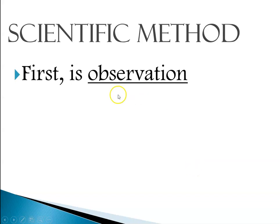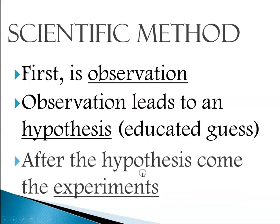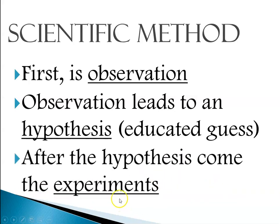When you're using the scientific method, you'll observe something with your senses. That observation leads you to making a hypothesis, a so-called educated guess. That educated guess is typically a testable statement, which leads to experiments. You observe something, you test it based upon an educated guess, and you run some experiments.